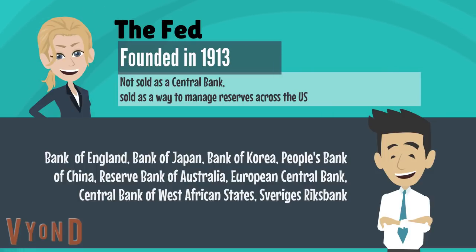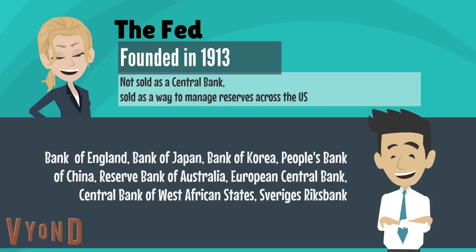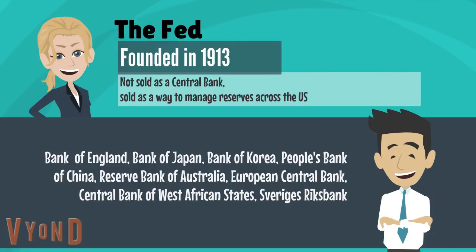They have one central bank that spans a number of countries, but then some of those countries still have their own central bank. So Germany has the Bundesbank, Sweden has the Sveriges Riksbank — these central banks are still operating in Europe even though they also have a central bank for all of Europe.